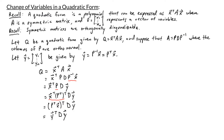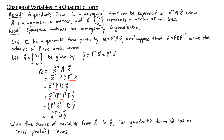So originally my quadratic form is written in terms of the variables x1 through xn. By the end of it, we are rewriting it in terms of the variables y1 through yn — a change of variables. With this change of variables, we have y transpose times the diagonal matrix D times y. When we multiply this out, we'll see that there are no cross product terms.